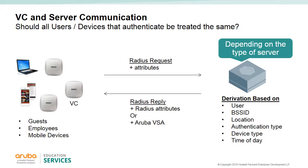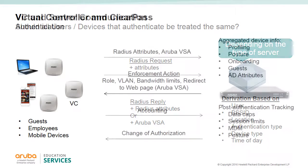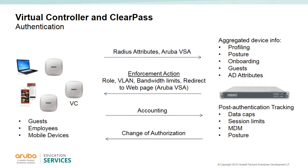No configuration is needed on the virtual controller to look for VSAs. When a RADIUS attribute is returned, the virtual controller must be configured to look for that attribute. If an Aruba ClearPass server is used, much of the communication between the VC and ClearPass is automatic.